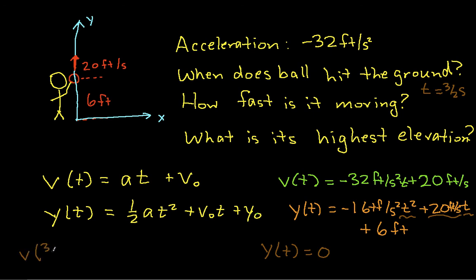Well, the velocity at 3 half seconds is going to be, let's see, minus 32 feet per second squared times t, which is 3 half plus 20 feet per second. And when I work this out, I got that this is minus 28 feet per second.